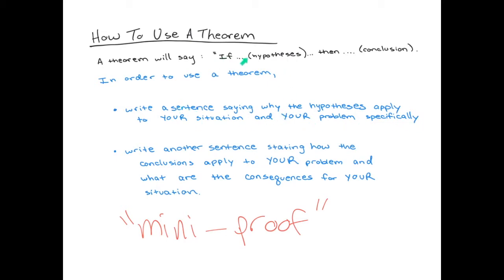If it says 'if the function is continuous, then blah blah blah,' you need to say why your function is continuous. You need to establish that this theorem does apply to your situation. For example, using continuity, you can say something like: my function is cosine, and we know that sine and cosine are both continuous on the whole real line. That's something from the beginning of the class. So that's the first step.